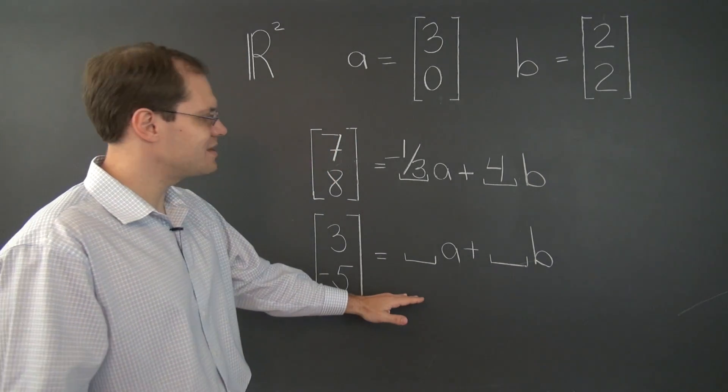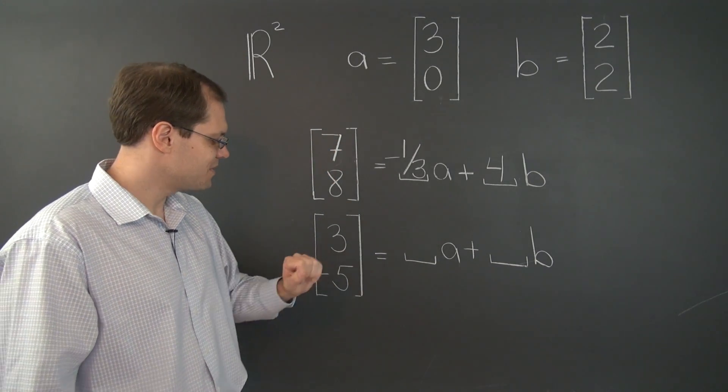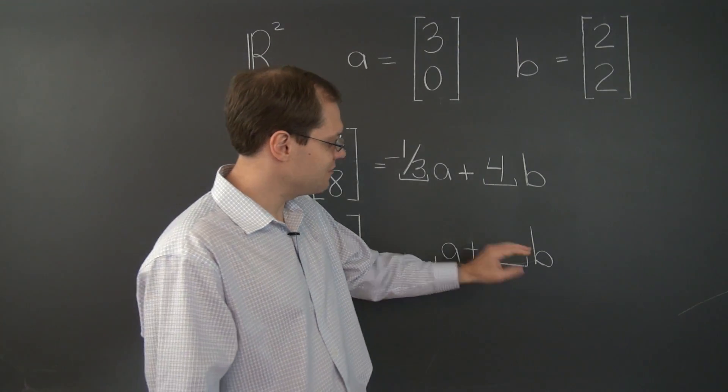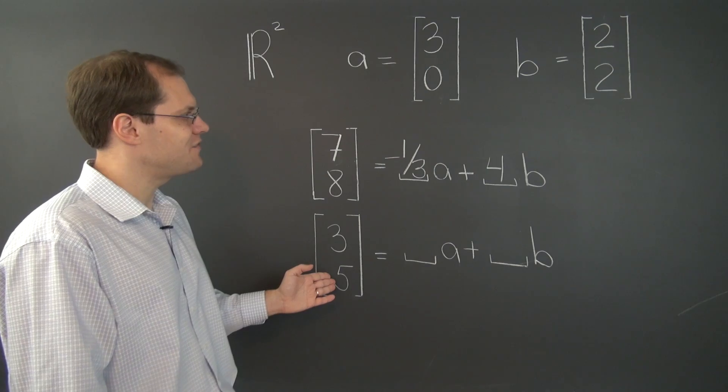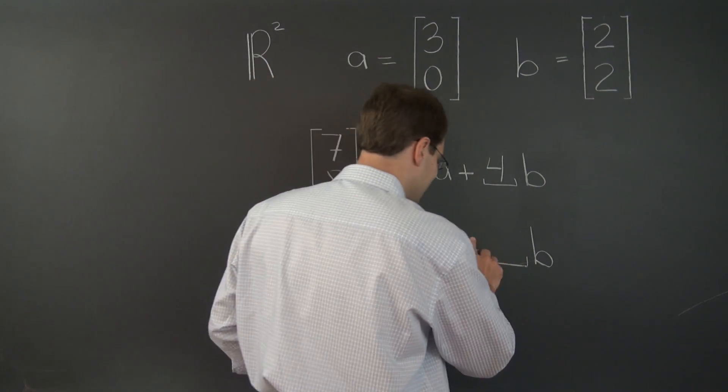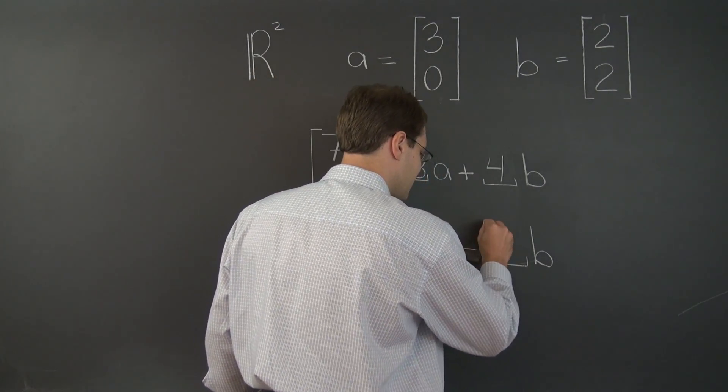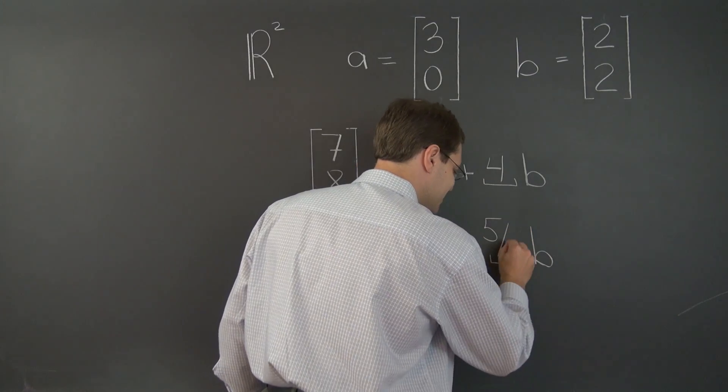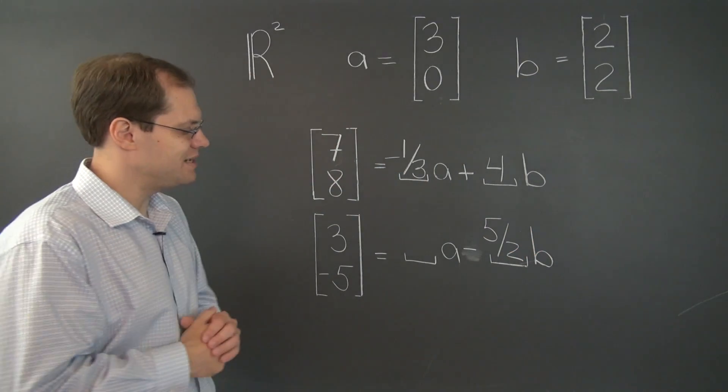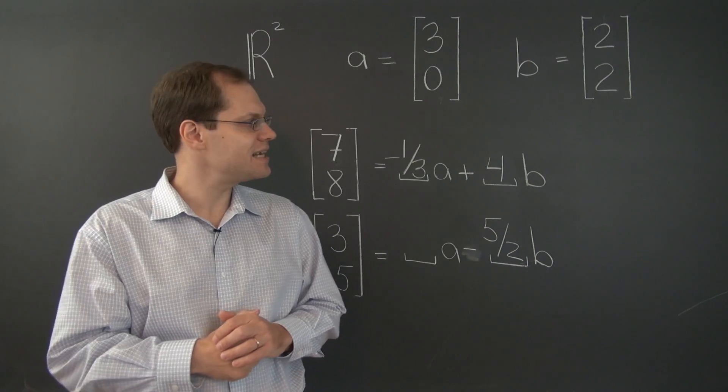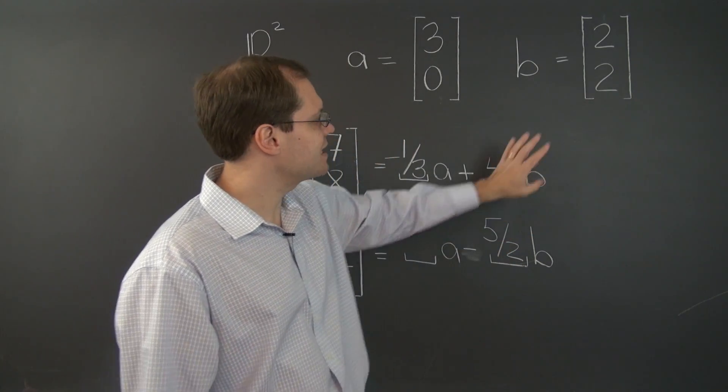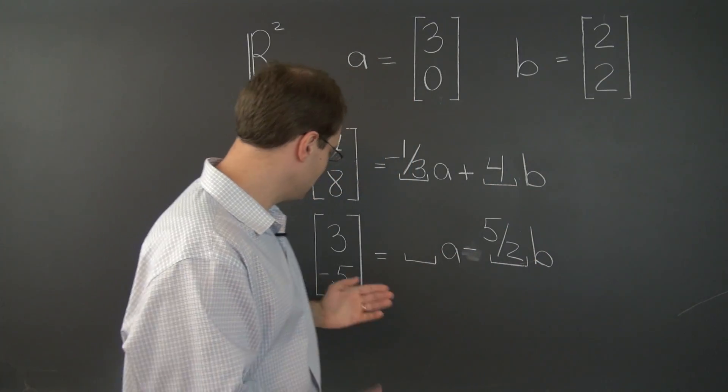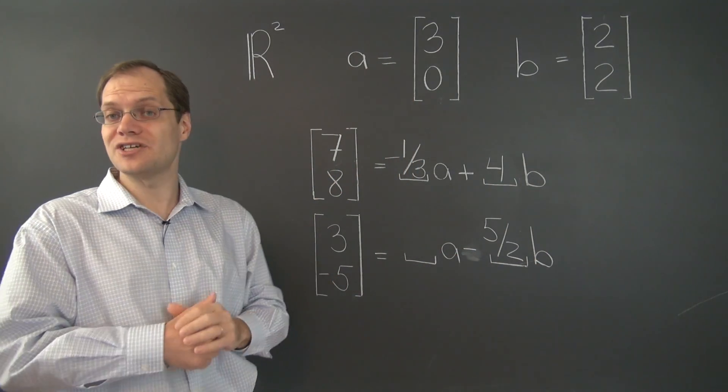Now let's do the same thing in the second example. Fractions will appear in the very first coefficient that we determine. We need to get minus 5. So we must take negative 5 halves of B. Because there is a 2 here now. Negative 5 halves times 2 will cancel the 2, and we'll end up with minus 5 just like we want.